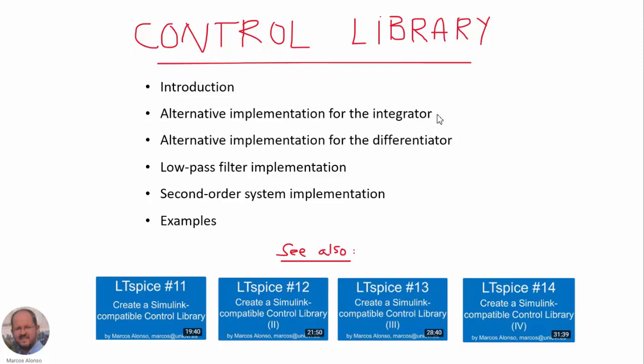We will see an alternative implementation for the integrator, then an alternative implementation for the differentiator. We will show how to implement a low pass filter for our control library. And then we will also explain how to create a second order system for our library. Finally, we will be showing several examples in LTSpice to verify the behavior of these components.